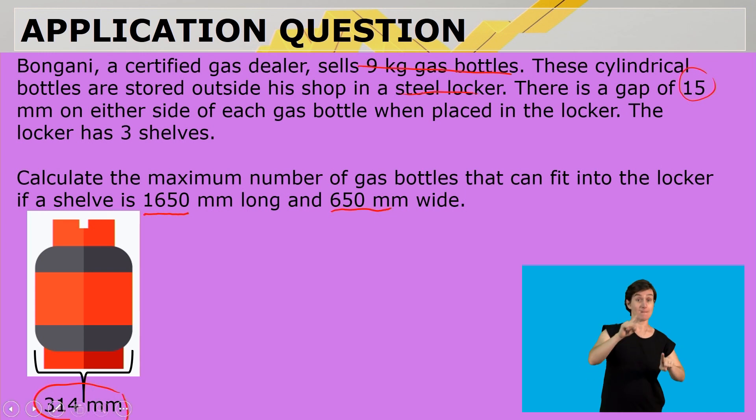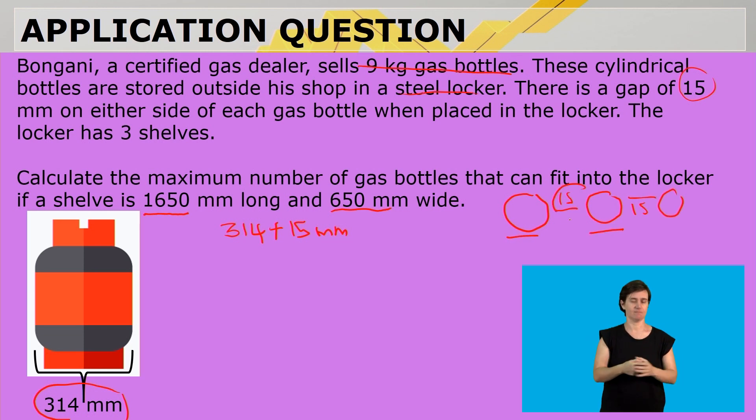But we need to take the 314mm, which is the diameter, and add 15mm to it. Because there is a gas bottle and a space of 15mm, another gas bottle, a space of 15mm, and another one. So each gas bottle has got an extra 15mm that's needed. So that gives us a total diameter of 331mm.